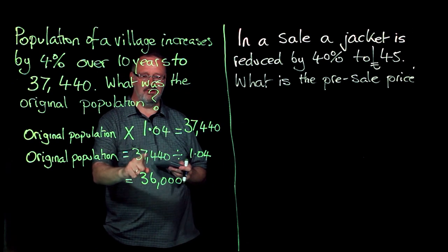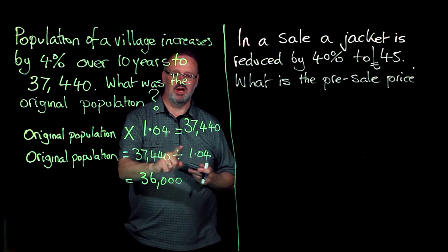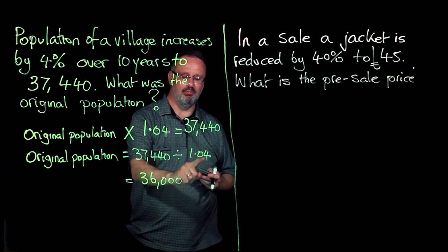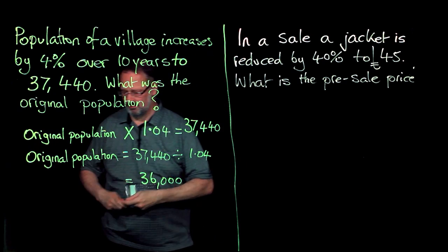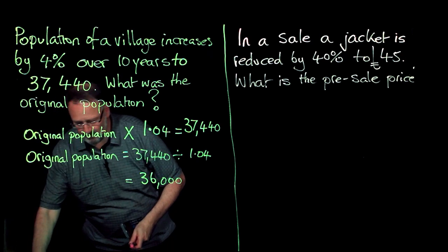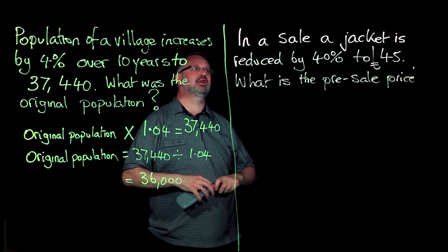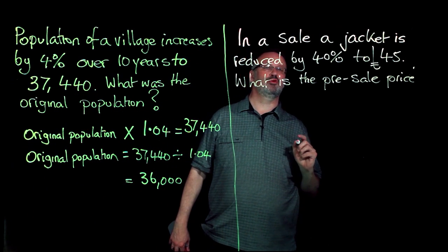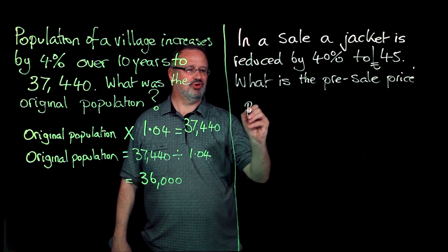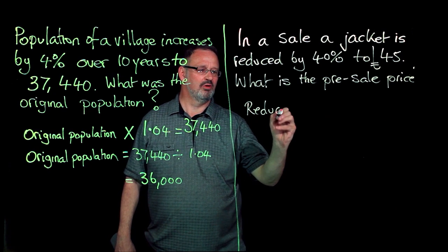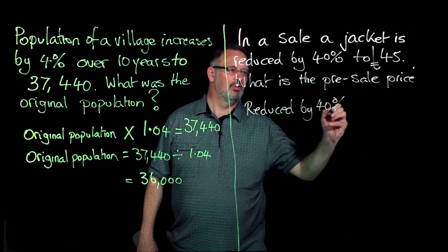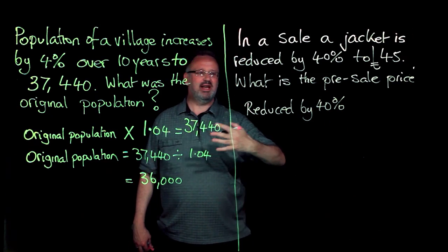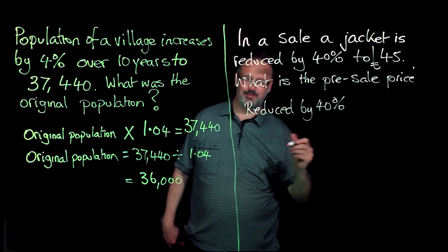Is going to be my finishing population divided by the multiplier. Let's look at my second problem. Divided by the multiplier, please remember that. In a sale a jacket is reduced by 40%. So if it's reduced by 40%, what value have I left with? Well, I'm left with 60%.